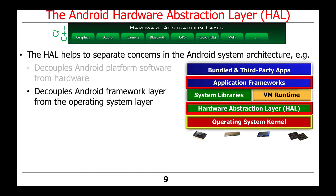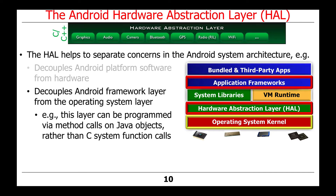Another goal of the HAL is to decouple the Android framework layer from the operating system layer. In particular, when you program at the operating system layer, you typically have to write code using low-level C function calls, which are tedious and error-prone to use. In contrast, the application frameworks layer of Android is developed in Java. So when various libraries or classes are exposed to higher layer parts of Android via an object-oriented approach, it's possible to access them via convenient method calls on Java objects rather than using low-level C system function calls.